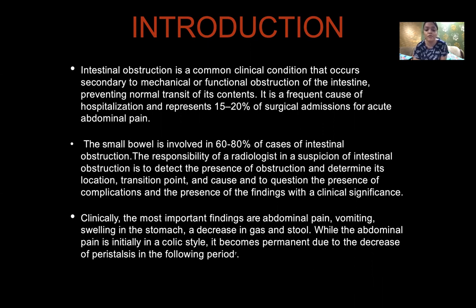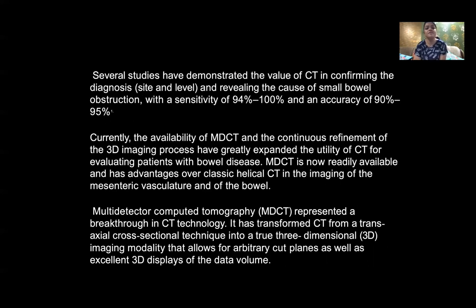Clinically, the most important findings are abdominal pain, vomiting, swelling in the stomach, and a decrease in gas and stool. While abdominal pain is initially colicky in style, it becomes permanent due to decreased peristalsis in the following period. Several studies have demonstrated the value of CT in confirming the diagnosis and revealing the cause of small bowel obstruction, with a sensitivity of 94 to 100% and accuracy of 90 to 95%.